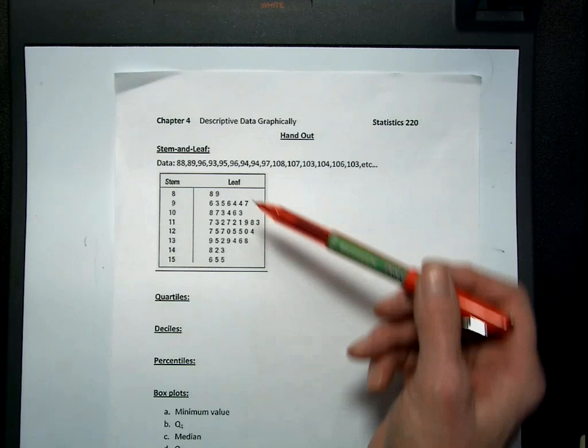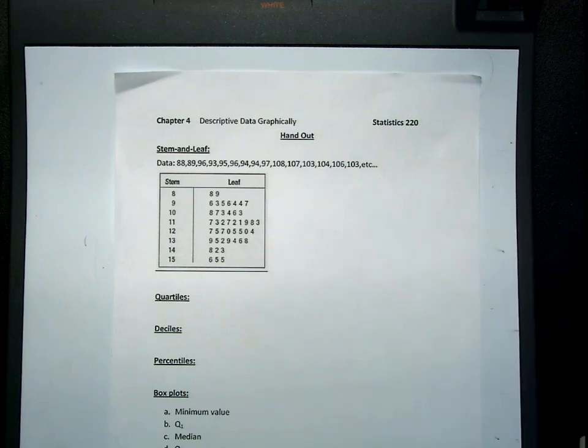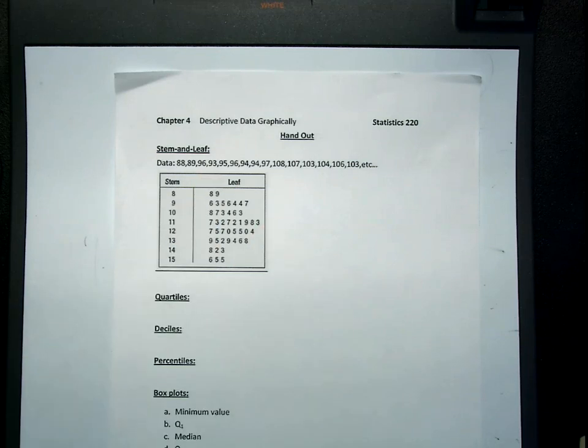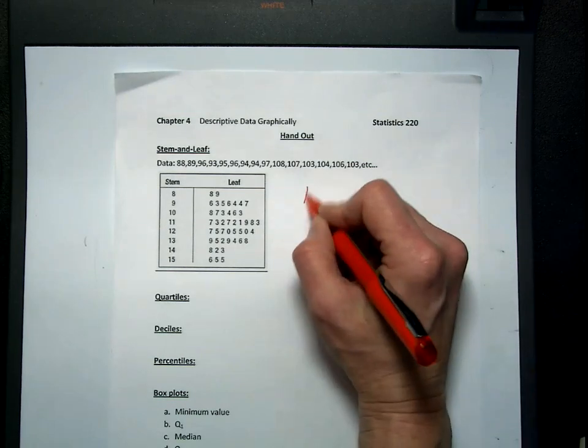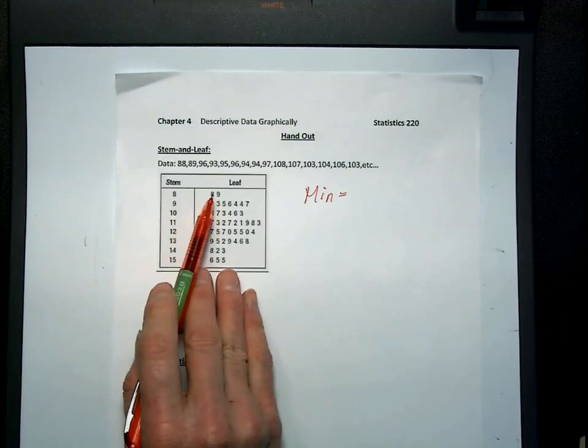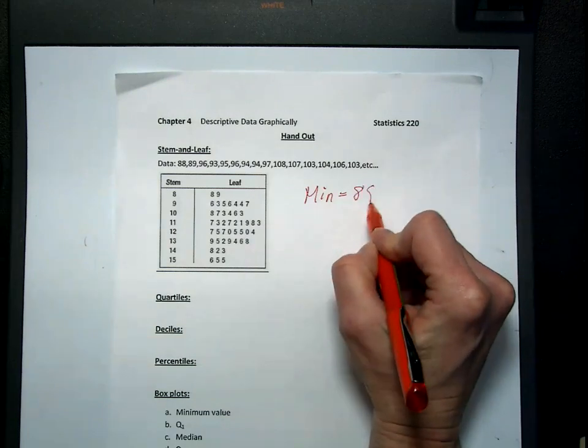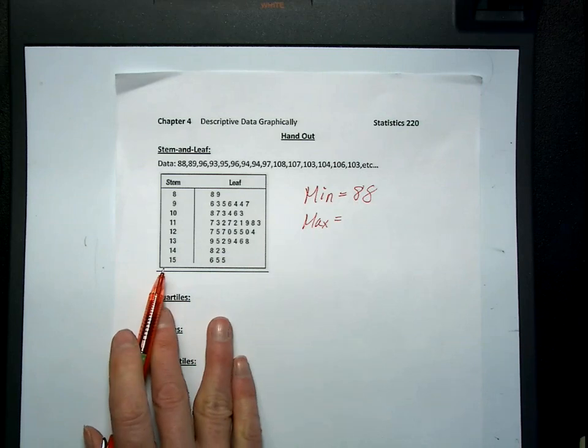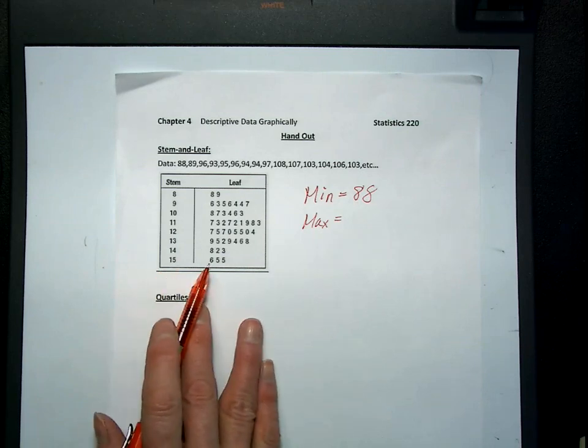This is also in your book. And we've actually created a histogram on the edge, so it has all the advantages of a histogram, except we don't lose the actual data. In fact, if I showed this in a presentation, you should be able to tell me, for example, what is my minimum data point? My minimum data point here would be 88. What's my maximum data point? Well, if I look down here, it's 156.